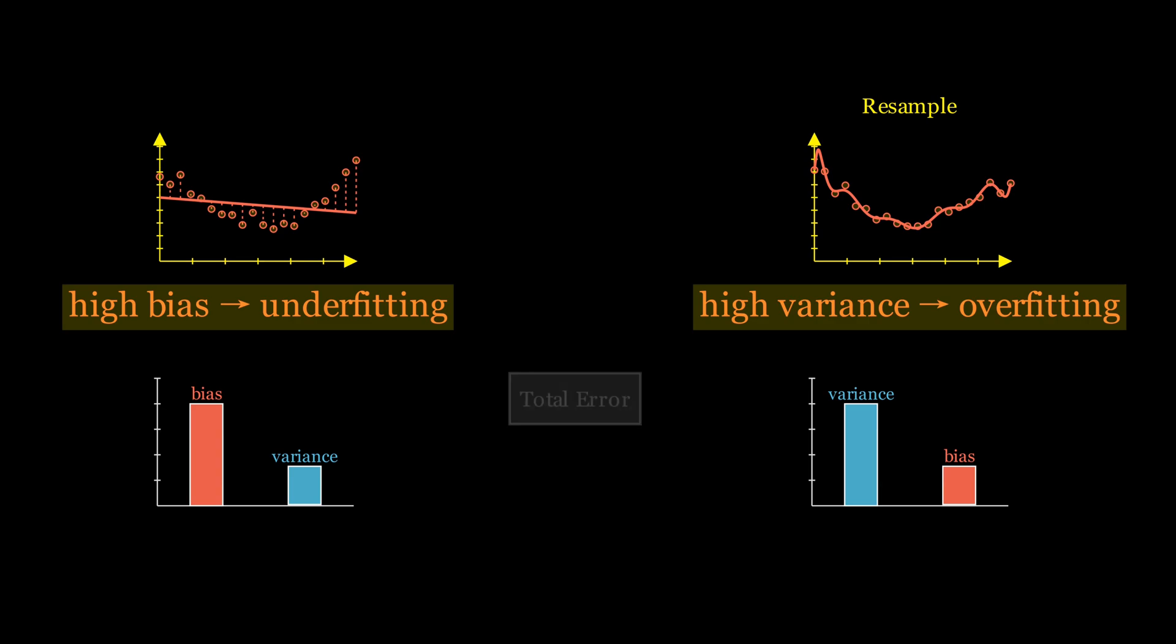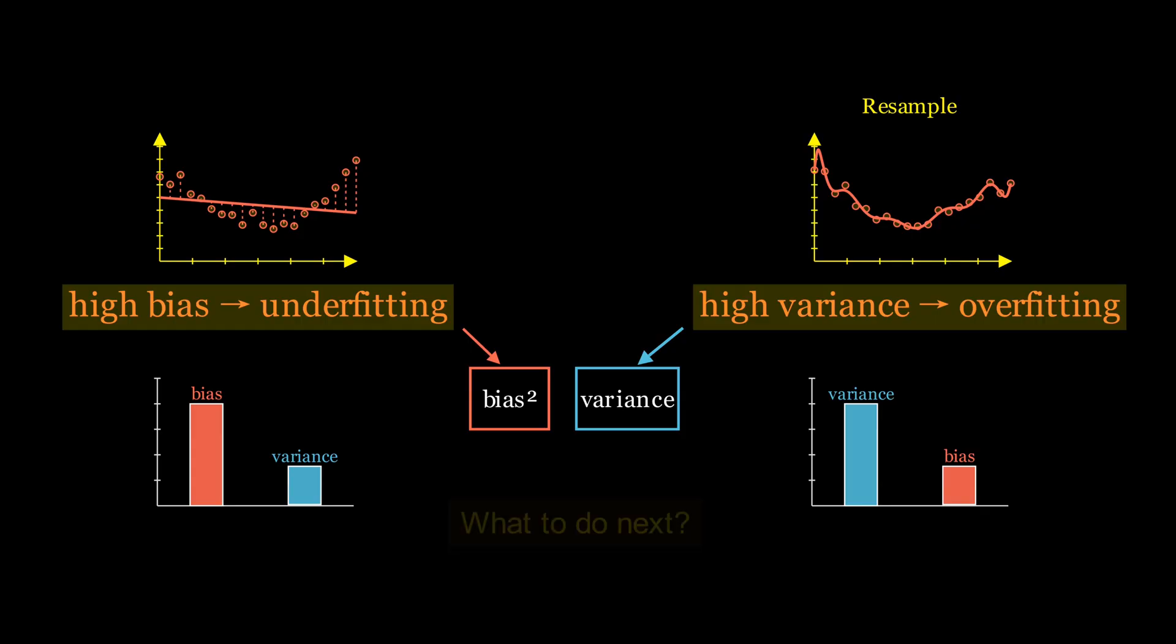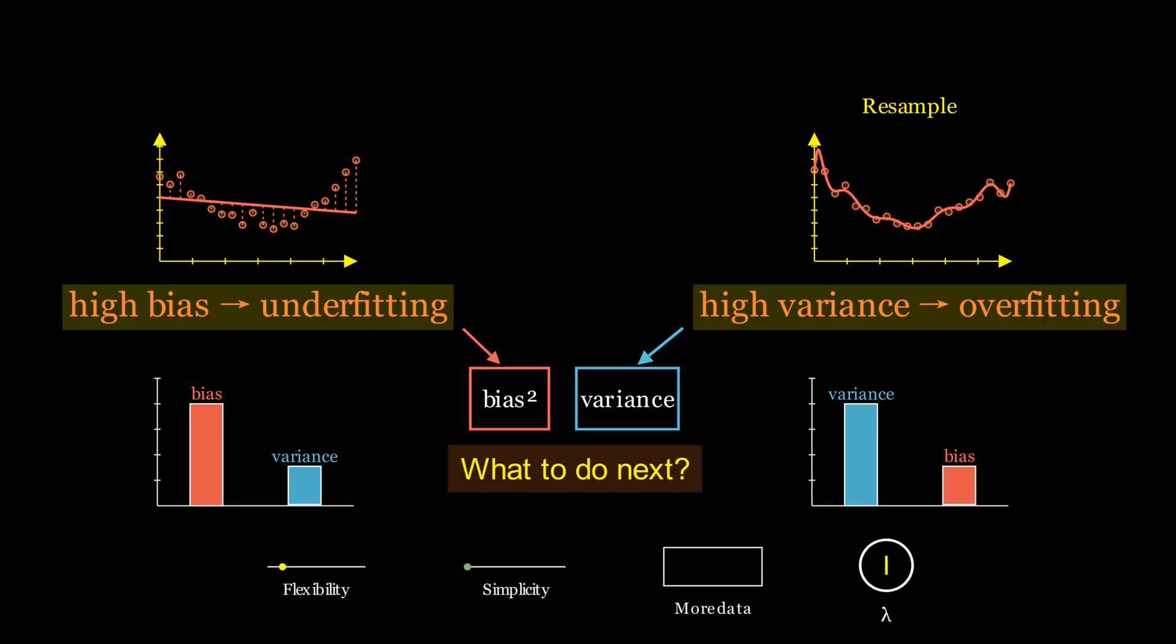Here's the key. By decomposing the error into bias and variance, we can figure out whether our performance problem is due to rigid assumptions or excessive complexity. That's powerful because it directly informs what to do next. Do we make the model more flexible, simplify it, get more data, or add regularization?